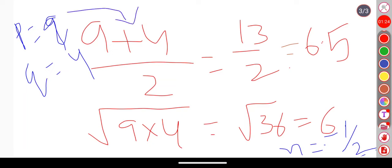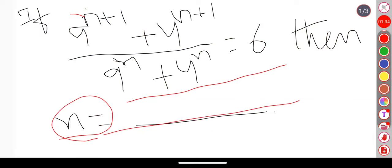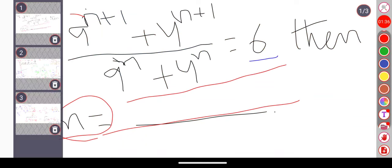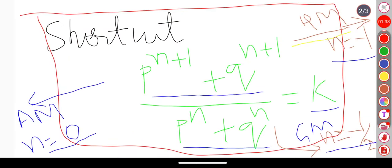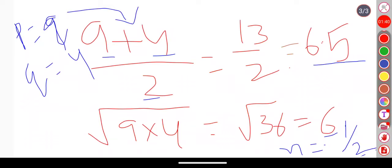If we take arithmetic progression, if we add up (9 plus 4) divided by 2, it comes around 6.5. Whereas in the question what we are given, we are given the value as 6. But what we obtain is 6.5, so surely it is not the case of arithmetic progression.